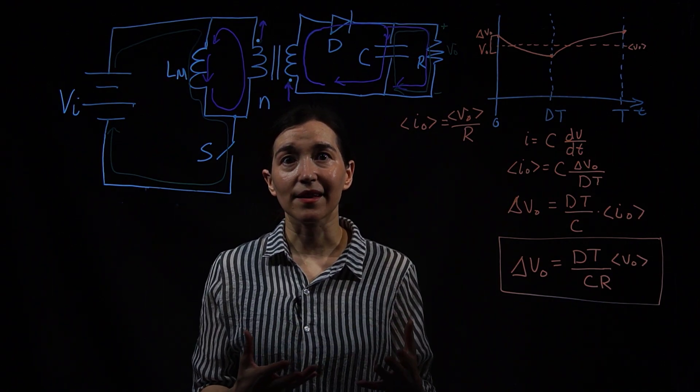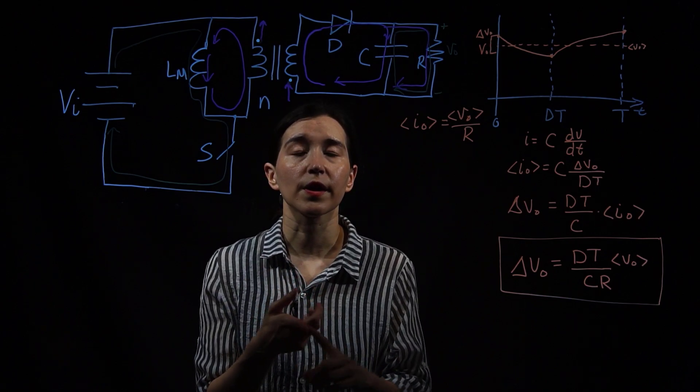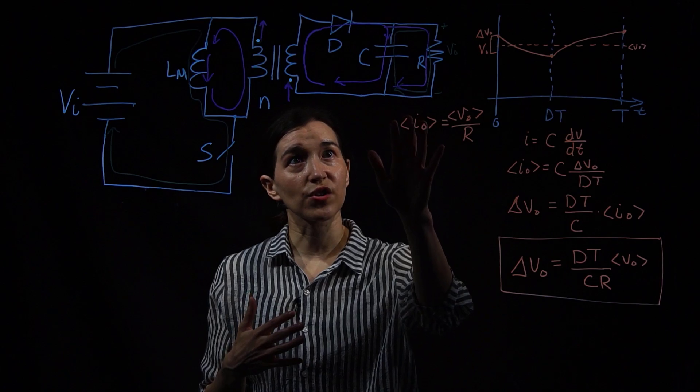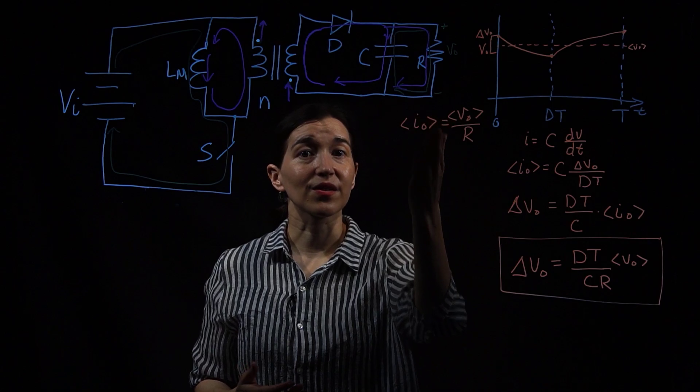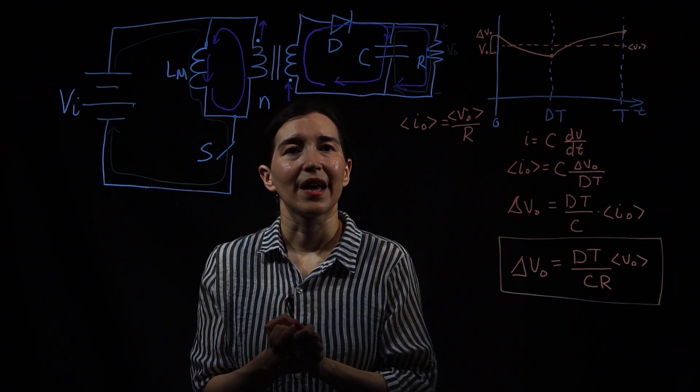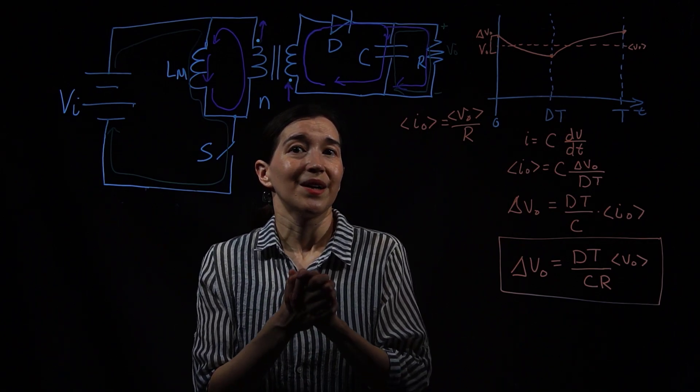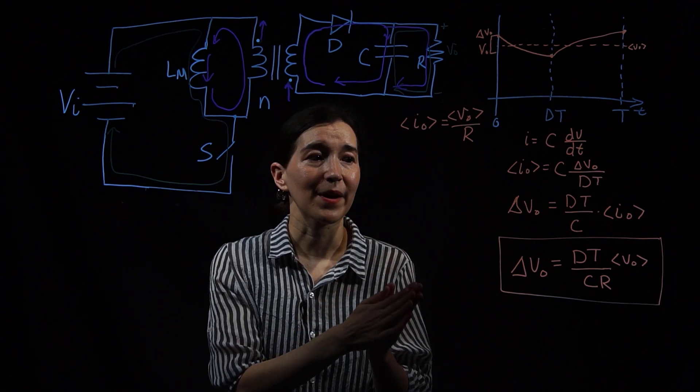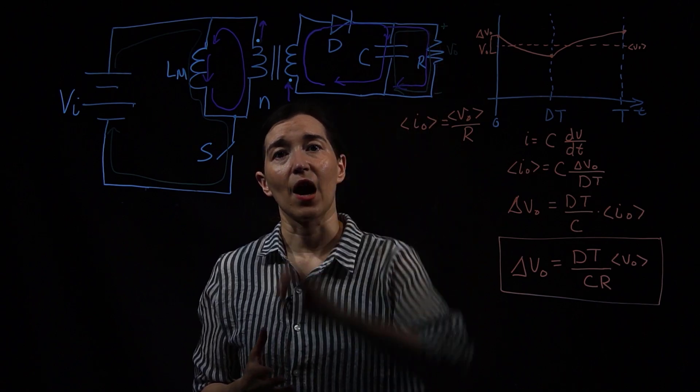Notice that this is exactly the same equation for the output voltage ripple for the boost converter and the buck-boost converter. This has to do with the topology structure when you have the capacitor providing all of the charge to the load resistor during one of the duty phases. Then you're going to have essentially the same equation. You can use it for the flyback converter to figure out the output ripple occurring at the output voltage.